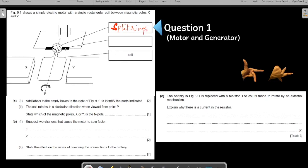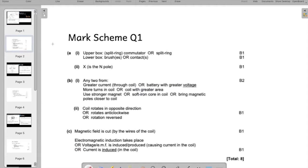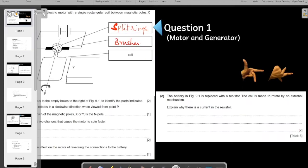Second thing, these are the black rectangles that you see. They are your contact brushes. If you wish, you can refer to the mark scheme. I will keep showing you the mark scheme as well. So the upper box: split rings, also called commutator rings. Lower boxes: you can call them brushes or contact points.